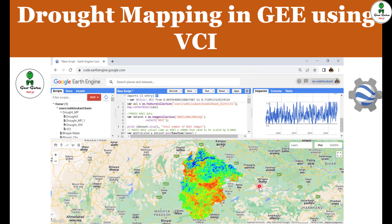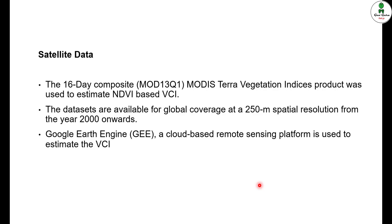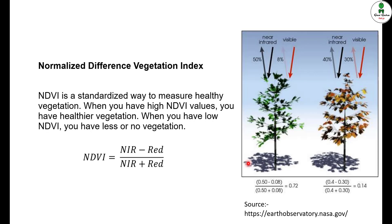Welcome to the channel JioGuru. In this video we are going to learn how we can perform drought mapping in Google Earth Engine using the VCI, that is the Vegetation Condition Index. For this exercise we are going to use MODIS satellite data — it is a 16-day composite MODIS dataset of vegetation indices, specifically NDVI. This NDVI-based product is used to calculate the VCI. The datasets are available for global coverage at 250-meter resolution from year 2000 onwards, and we will use Google Earth Engine, a cloud-based computational platform, to estimate the VCI.